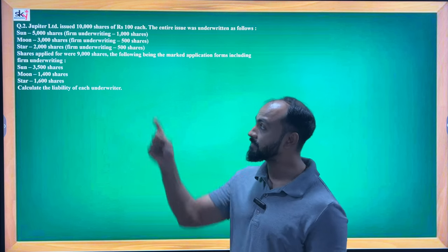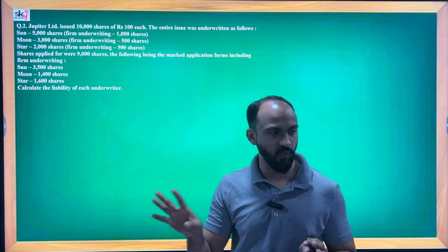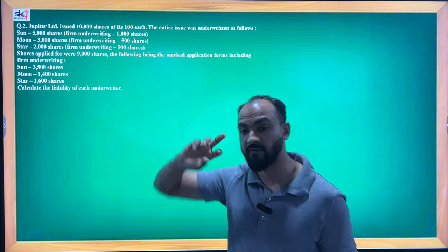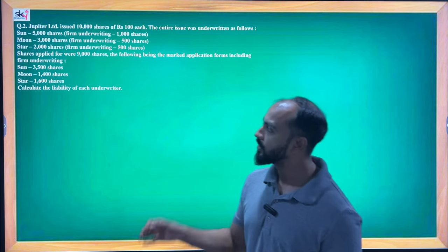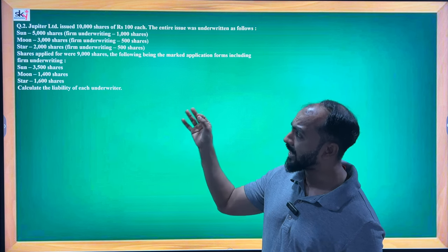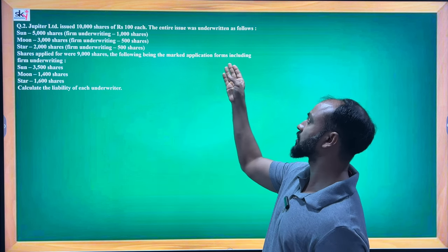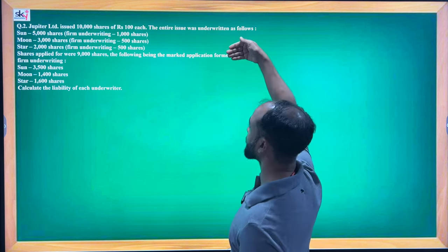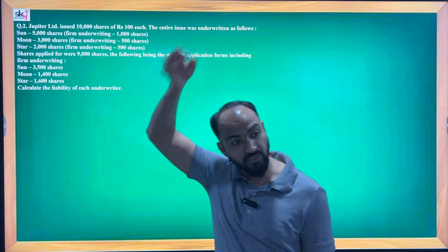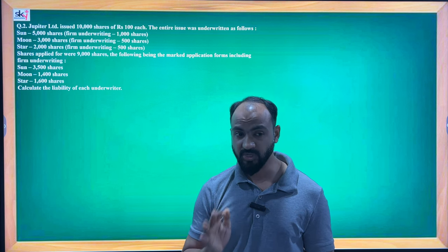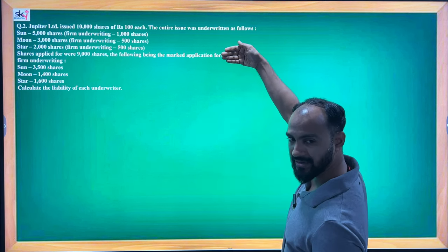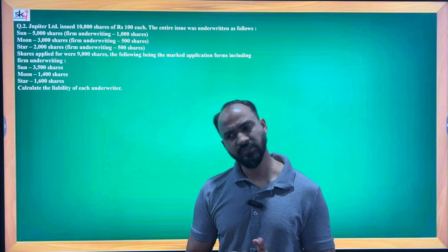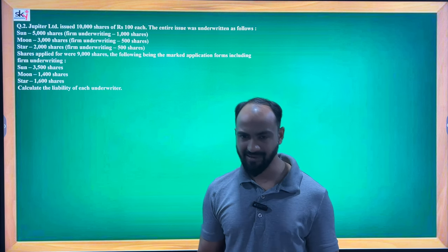In the previous sum also it was stated 'in all application received' — that word was used. Here, nothing like that is used. It says: shares applied for were 9,000 shares — the following in the marked application form including firm underwriting. The word 'including' has appeared. Even if this word was not there, the assumption would still be that it is including. So if 'including' is mentioned or not, the treatment remains the same.